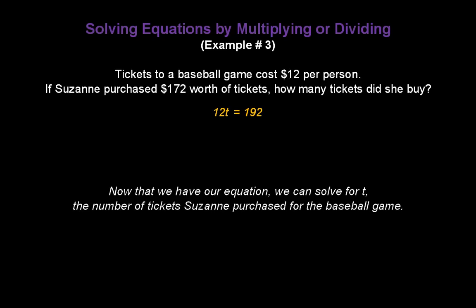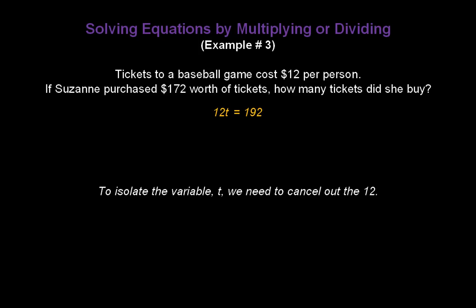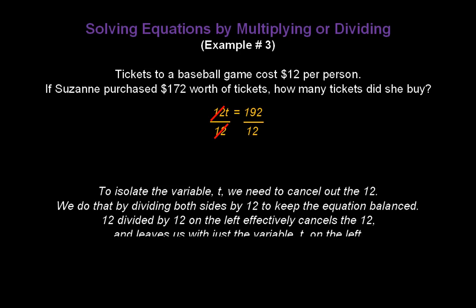Now that we have our equation, we can solve for t, the number of tickets Suzanne purchased for the baseball game. To isolate the variable t, we need to cancel out the number 12. And we do that by dividing both sides by 12 to keep the equation balanced. So I'll divide the left by 12 and the right by 12. Obviously, 12 divided by 12 on the left effectively cancels out the 12s, turns them into a 1, and leaves us with just the variable t on the left-hand side.